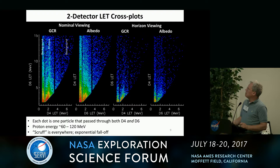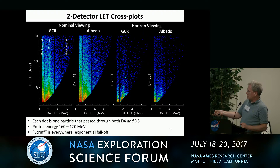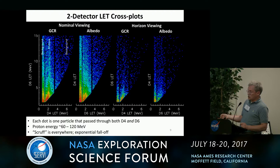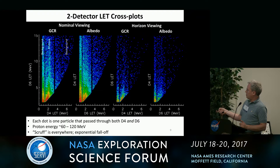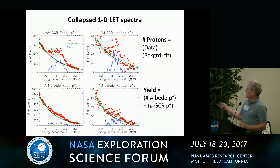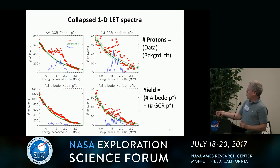Briefly, here is one way to plot raw data from the CRATER instrument. Each plot is a measure of energy deposited in one detector versus energy deposited in a second detector. Protons fall along a trail, but there's also noise on either side — we call that scruff. It falls off exponentially, so we can fit and subtract it. There will be some scruff events right under the proton track, so we subtract that out by collapsing each two-dimensional plot into a one-dimensional spectrum. The red dots are the data, the bump is the proton track, the green line is a fit to the background scruff, and subtracting green from red gives the blue proton-only spectrum.